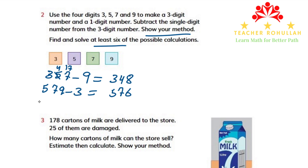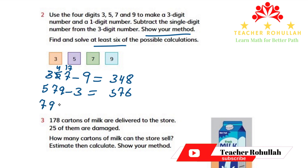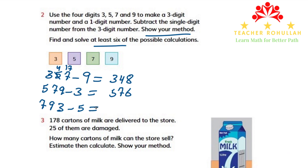The other three-digit number we can make is 793 minus 5. To subtract 5 from 793, we subtract from the ones place. We don't have enough, so we borrow from the tens place. 9 changes to 8, and 3 changes to 13. 13 minus 5 is 8, 8 minus nothing is 8, and 7 minus nothing is 7. So the answer is 788.